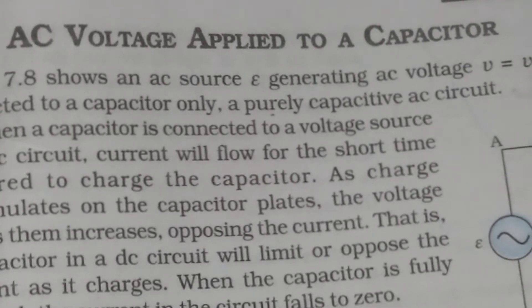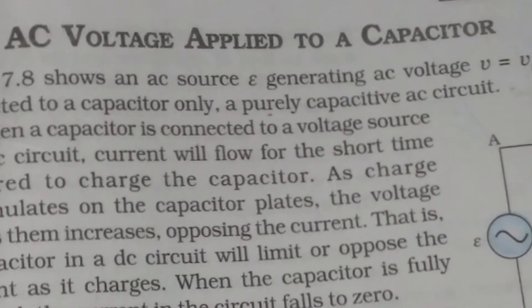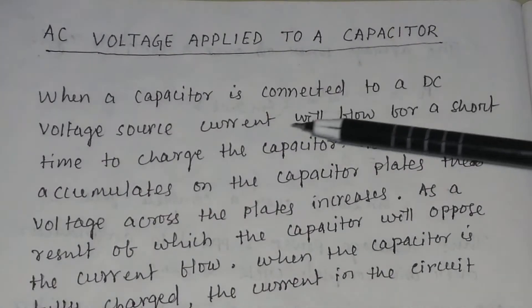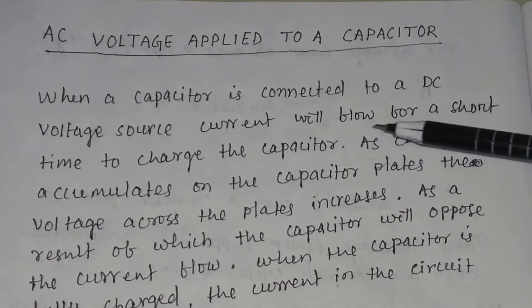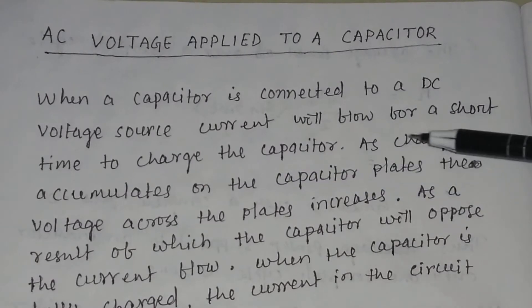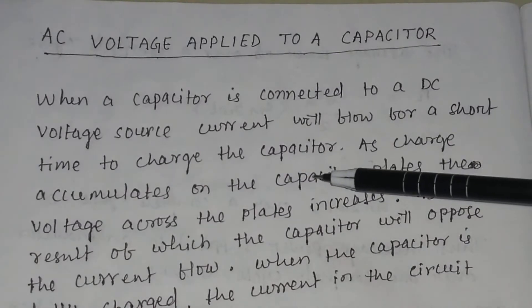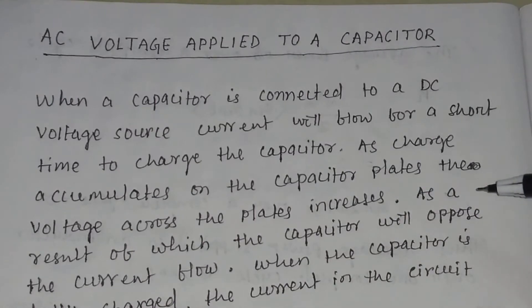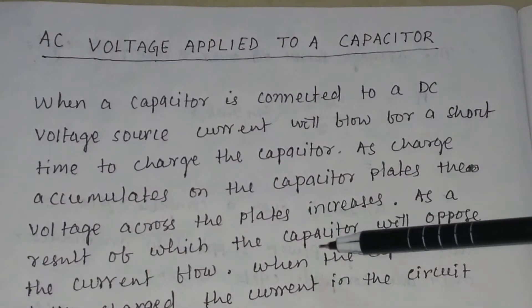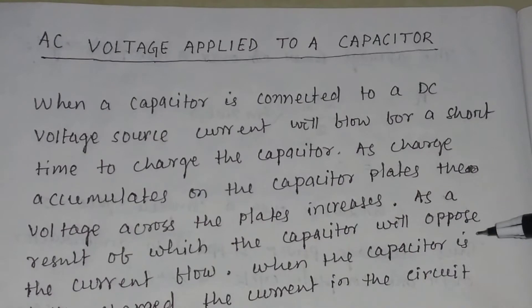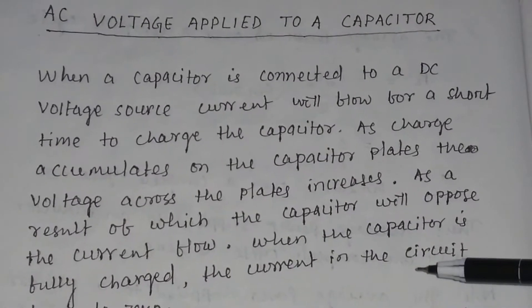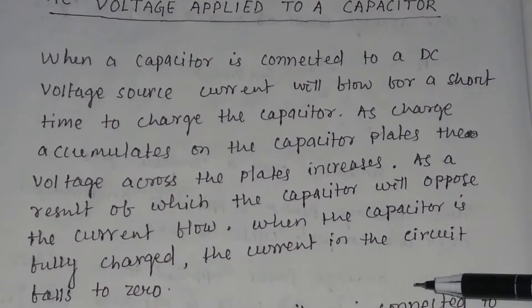AC Voltage Applied to a Capacitor. When a capacitor is connected to a DC voltage source, current will flow for a short time to charge the capacitor. As charge accumulates on the capacitor plates, the voltage across the plates increases, and as a result, the capacitor will oppose the current flow. When the capacitor is fully charged, the current in the circuit falls to zero.